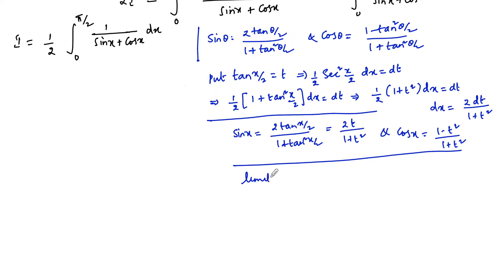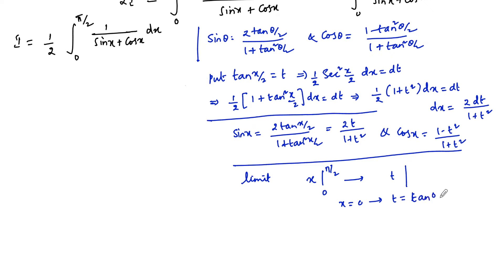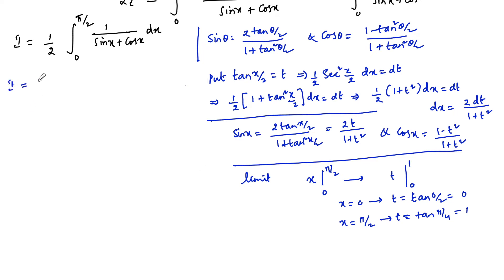The limits change as x varies from 0 to π/2. When x = 0, t = tan(0/2) = tan 0 = 0, so the lower limit is 0. When x = π/2, t = tan(π/4) = 1, so the upper limit is 1. The limits are changed from 0 to 1.